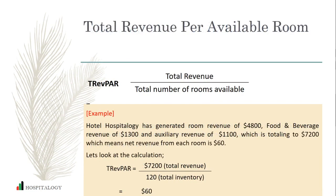Next is TRevPAR — Total Revenue Per Available Room. The formula is: total revenue divided by total number of rooms available. Remember, in the earlier slides for ADR and occupancy we calculated total room revenue, whereas here we have taken total revenue, which means any revenue generated from a particular room — such as through F&B, like if a guest went to the restaurant and had a meal.